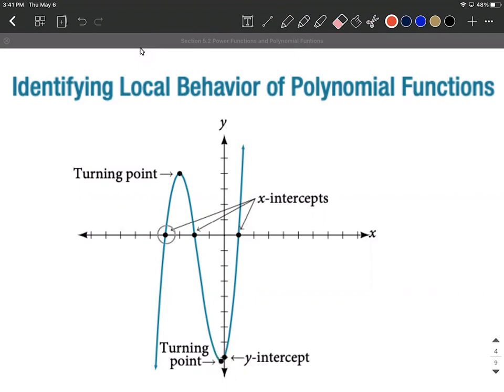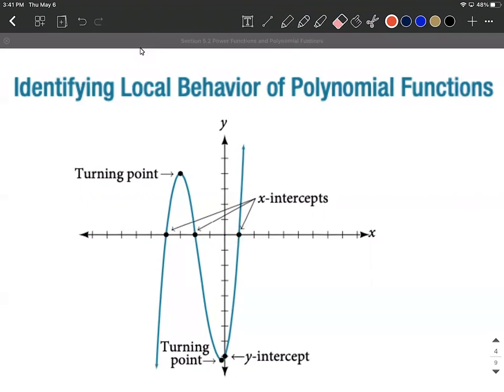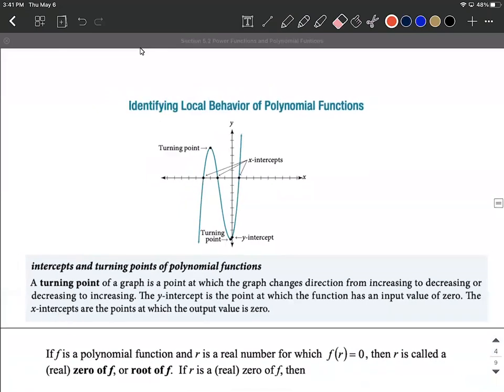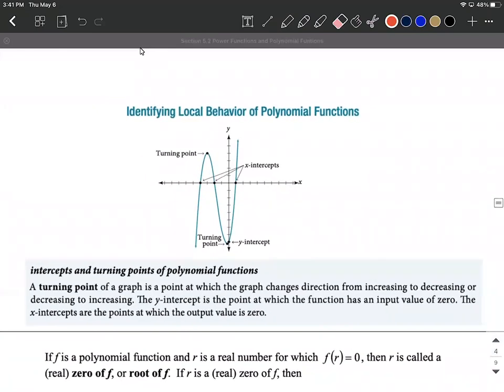X-intercepts, these are when the function itself equals zero or when our y value is equal to zero. It's kind of defined in this next box for you. Another thing that should be mentioned here is x-intercepts, whenever you use that terminology, it means the same thing as zeros or roots. So for our purposes we can think of x-intercepts, zeros, and roots as basically being interchangeable. They're points on our graph that are on the x-axis.